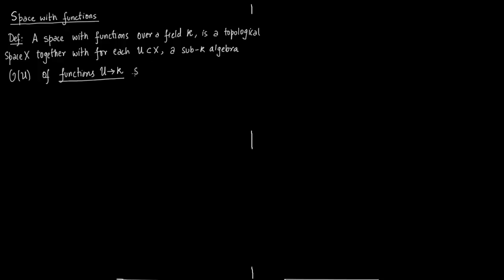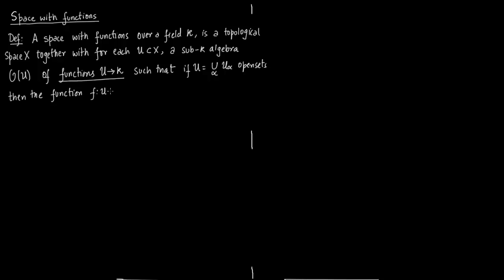If u is a union of sets u_alpha, then a function is said to be regular on the entire u if it is regular on each of its individual components. So if f is called regular on u, it must be regular on each of these smaller sets. You can think of f as polynomials — they act on a space, you plug in some values and you end up in k.